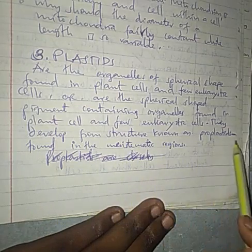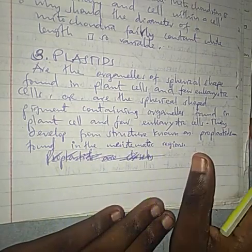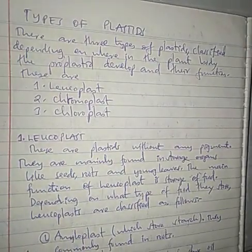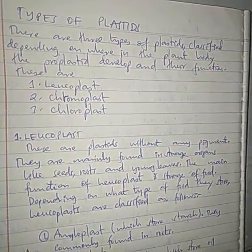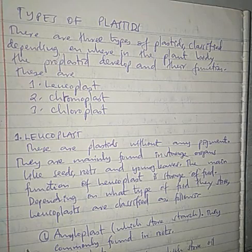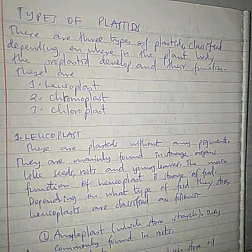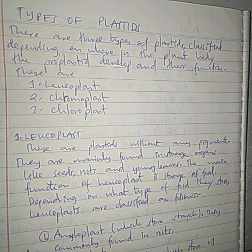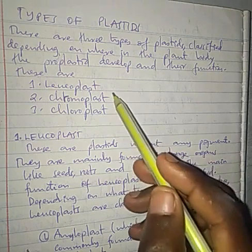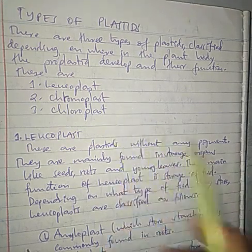Plastids develop from a structure known as proplastids, found in the meristematic region. One of their characteristics is that they contain pigments. There are three types of plastids depending on the part of the plant where they are found and their function: Leucoplasts, Chromoplasts, and Chloroplasts.